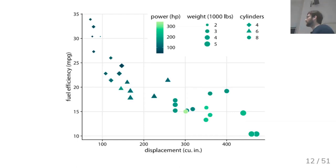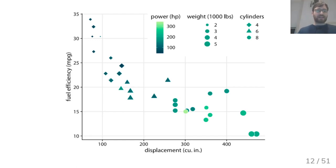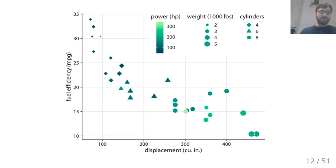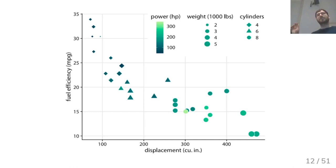Here is an illustration from Wilke's book showing how different aspects of data can map to different channels. This is a fuel efficiency dataset — a five-dimensional dataset shown in a two-dimensional plot. Displacement is mapped to the x-axis, fuel efficiency to the y-axis, horsepower to the hue, weight to the size of each point or marker, and cylinders to the shape of each marker. It's very interesting to see how you can combine all these different axes.